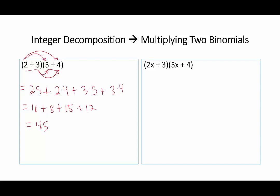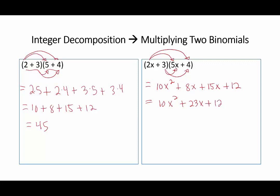Let us follow the same steps for (2x + 3)(5x + 4): 2x times 5x equals 10x², 2x times 4 equals 8x, 3 times 5x equals 15x, and 3 times 4 equals 12. This is equal to 10x² + 23x + 12. The multiplication of two binomials is nothing strange — it is just a property of numbers; we decompose and multiply in that way.